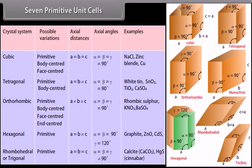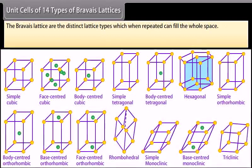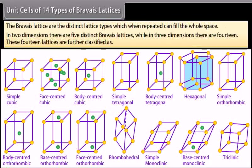There are 7 types of primitive unit cells. Their characteristics along with the centered unit cells they can form have been listed in the table. The Bravais lattices are the distinct lattice types which, when repeated, can fill the whole space. In 2 dimensions there are 5 distinct Bravais lattices, while in 3 dimensions there are 14.